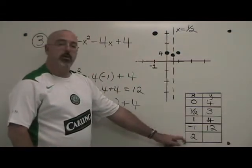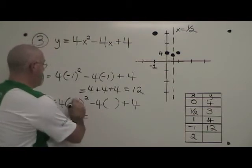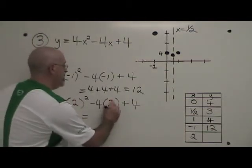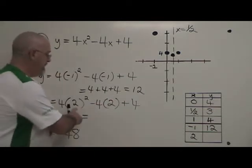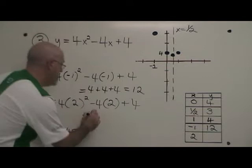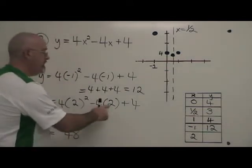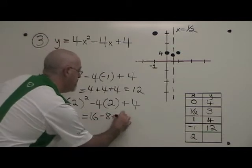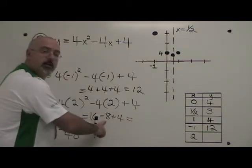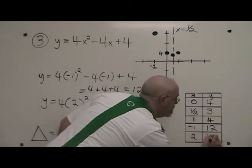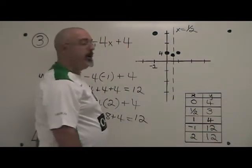When I plug x equals 2 into the equation, I get 4 times 2 squared minus 4 times 2 plus 4. 2 squared is 4 times this 4 is 16. Minus 4 times 2 is minus 8, and then I have this plus 4. 16 minus 8 is 8 plus 4 equals 12 again. I have the point 2, 12 which I put into the table and onto my graph.